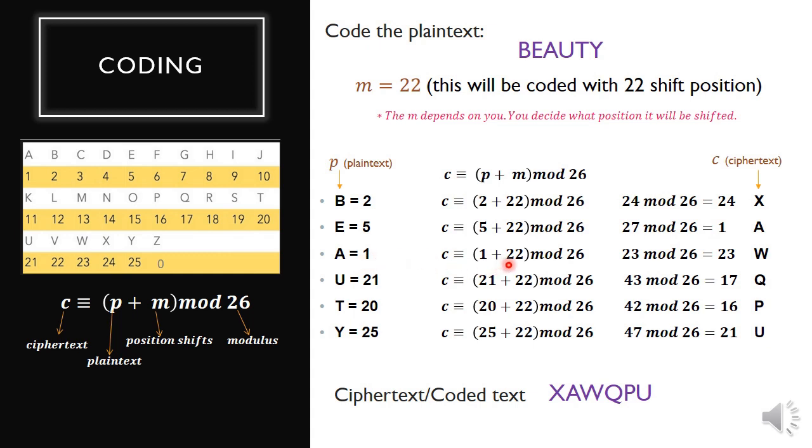Next, A is 1 plus 22 mod 26, which is 23 mod 26, equals 23 since it's less than 26. Then U is 21 plus 22 mod 26, which is 43 mod 26, and the remainder is 17. Likewise with T, which is 20, and Y equals 25. After solving, T is 16 and Y is 21. Now that we have these numbers, we convert them back to letters. 24 is X, 1 is A, 23 is W, 17 is Q, 16 is P, and 21 is U. So now the coded text is XAWQPU. That's how you do the coding.